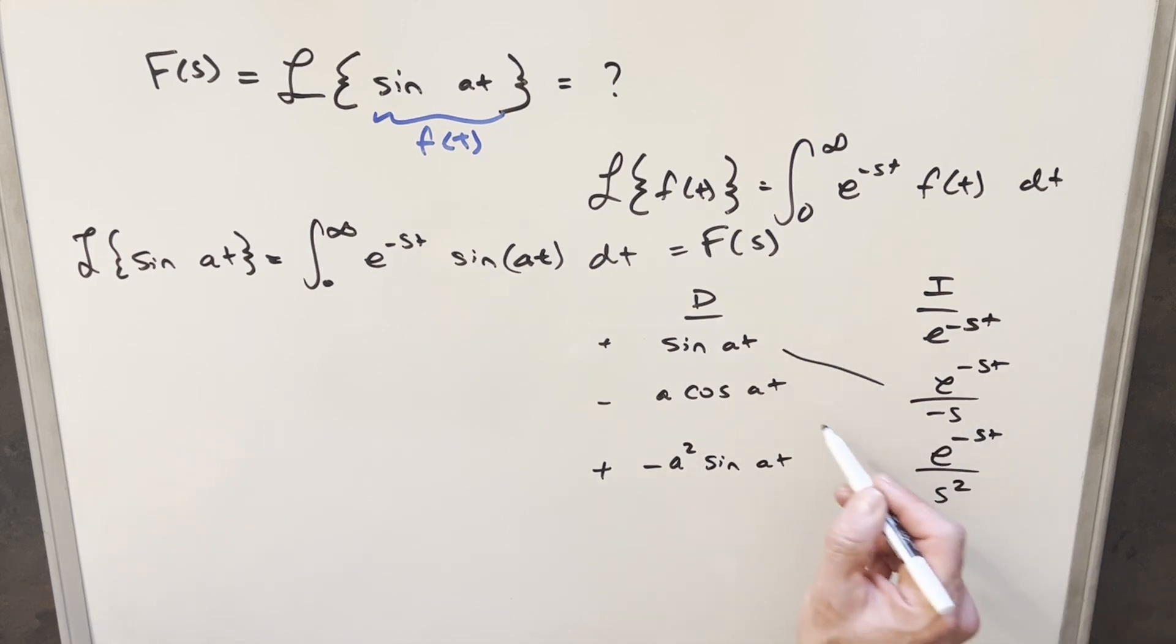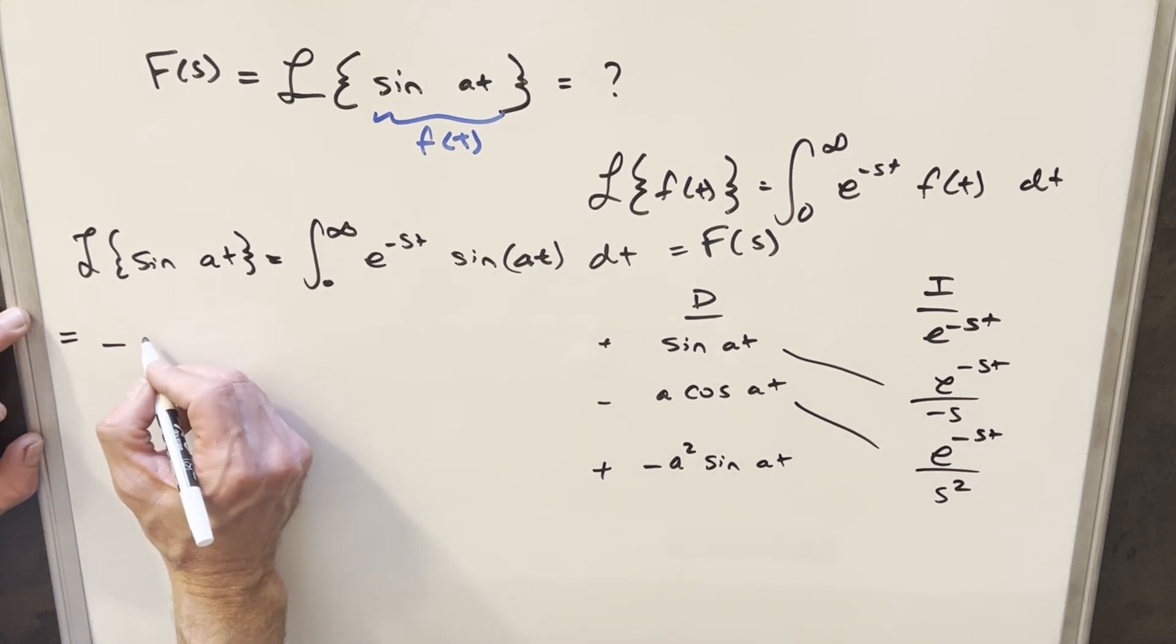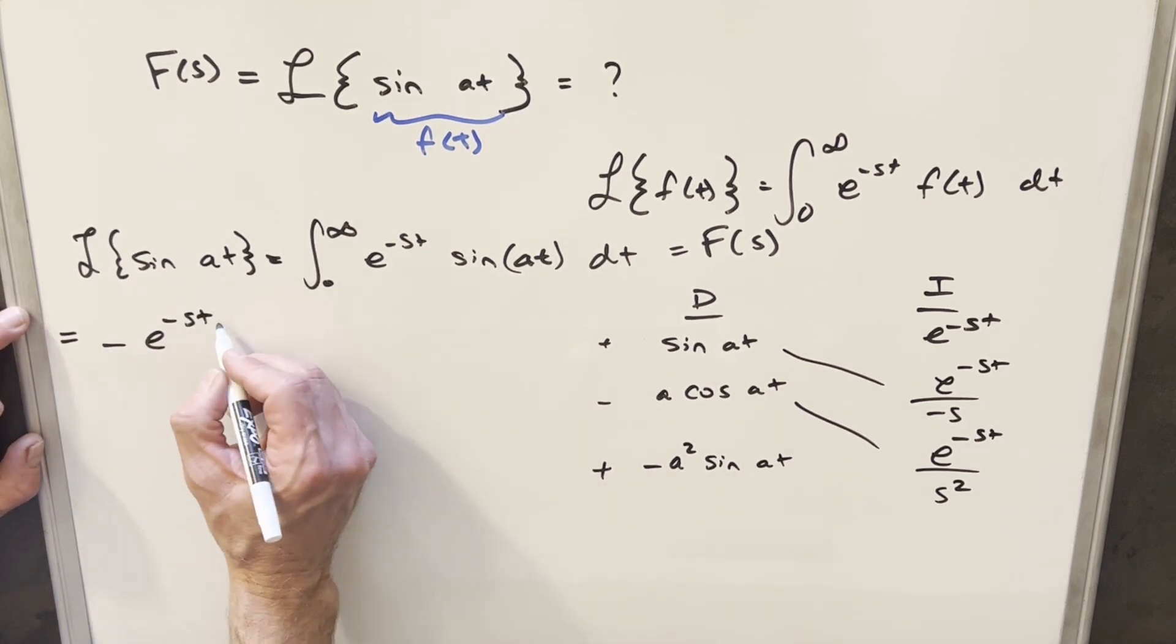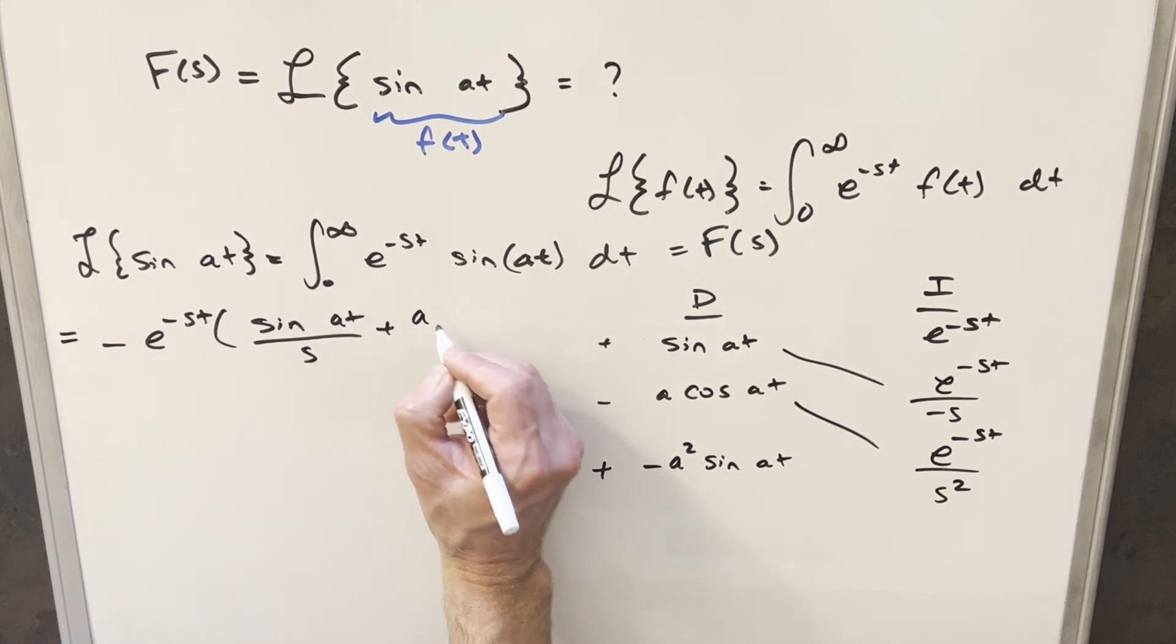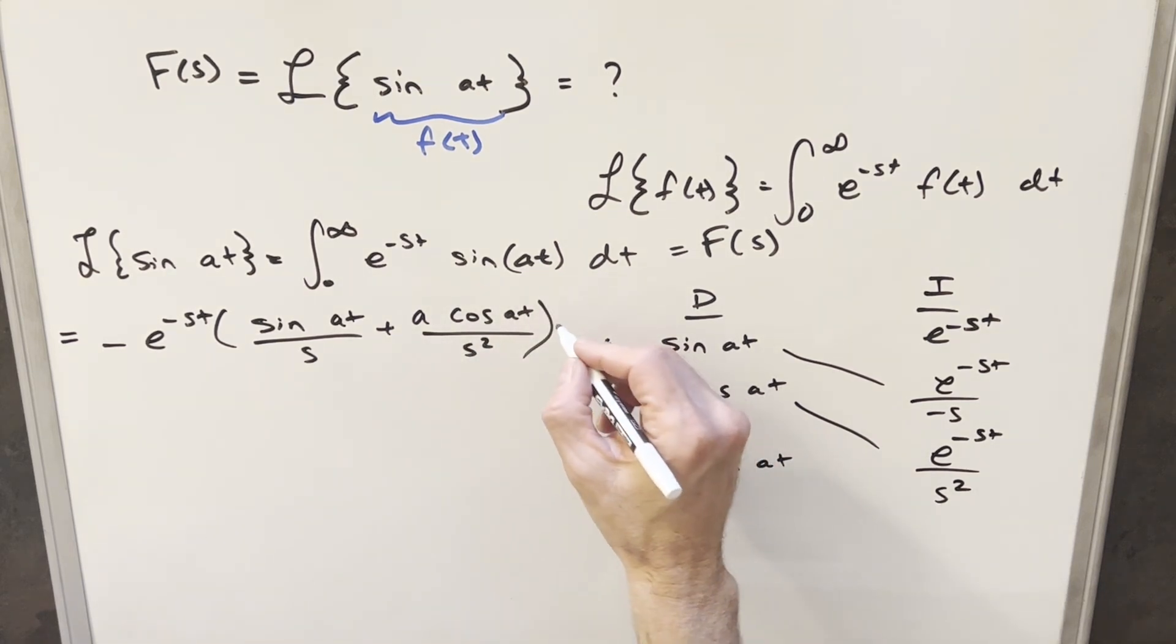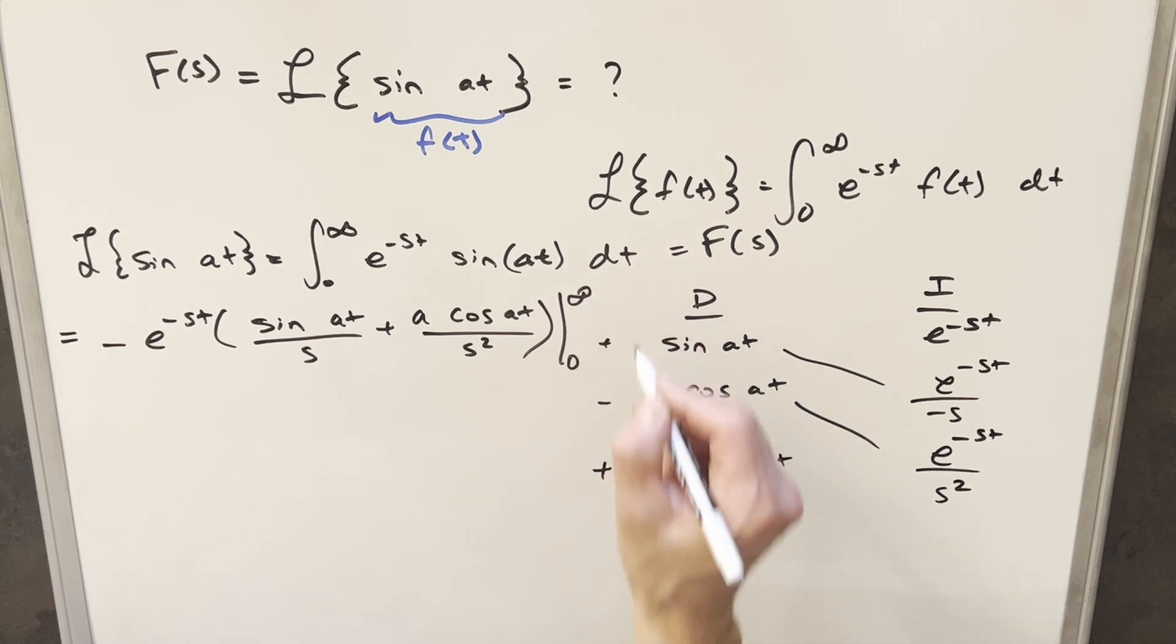So then we'll have part of our solution here on the diagonals, and we can factor some things out. One thing I can do is I can factor a minus e minus st up, because we have that in both terms, and they're both going to be negative. So for our first term, it's just going to be sine at over s. And then for this second one, we're going to have plus a cosine at over this s squared. And this is going to be evaluated from zero to infinity.